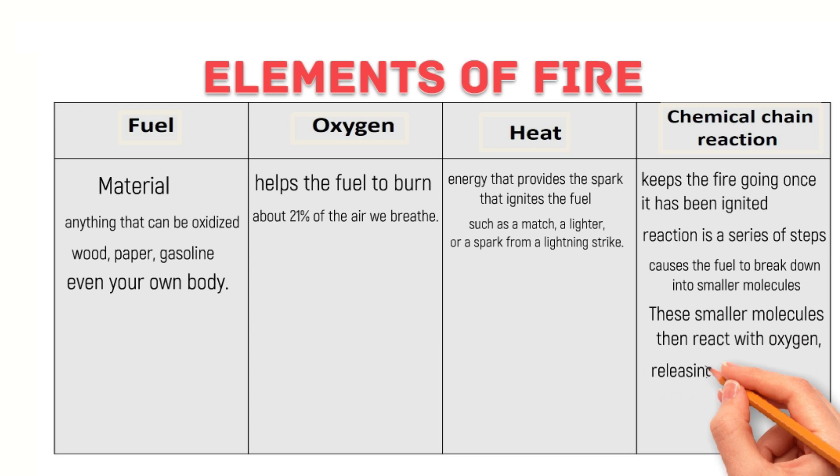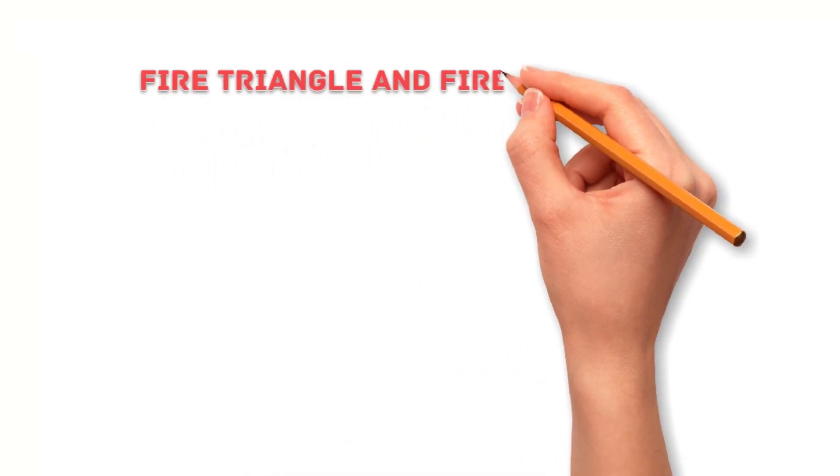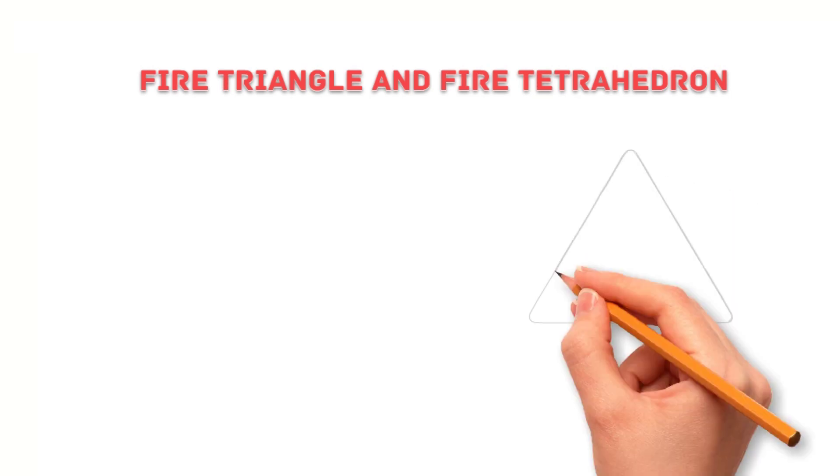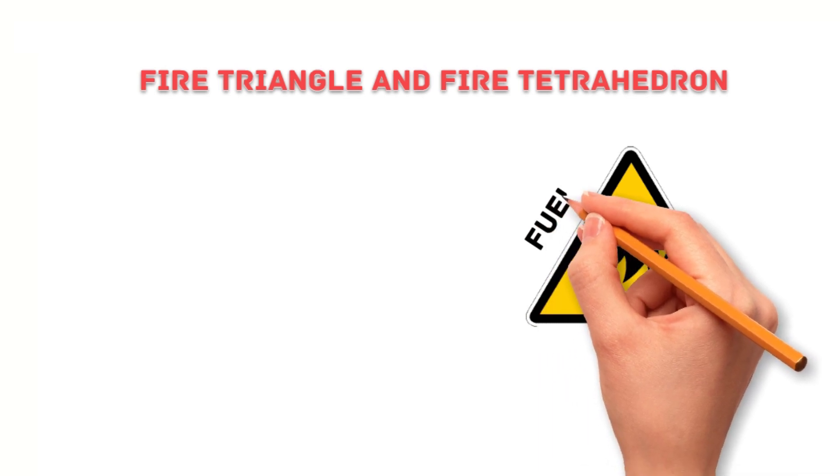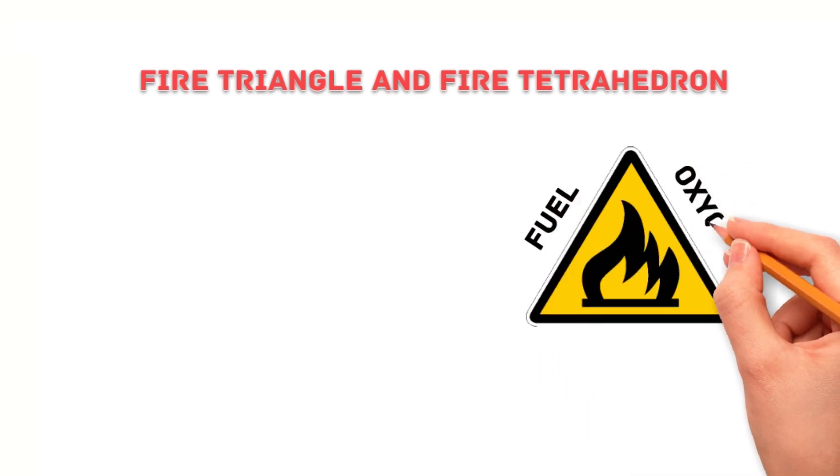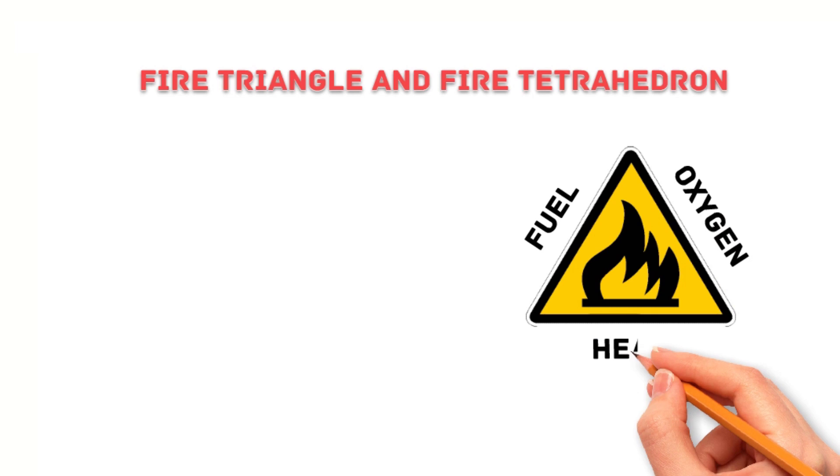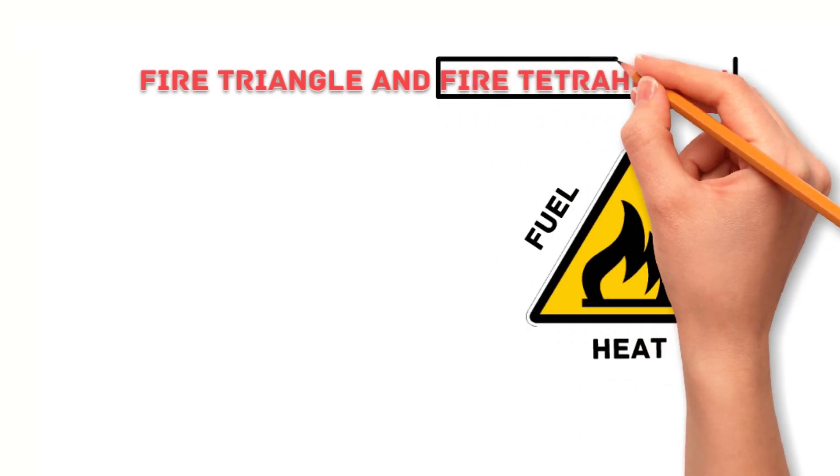The fire triangle is a model that illustrates the three elements that are essential for fire. The three sides of the triangle represent fuel, oxygen, and heat. If any of these sides is missing, the fire will go out.